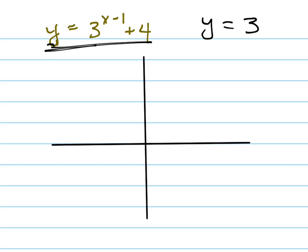3 to the x. And what does y equals 3 to the x do? It goes to the point 0, 1. It approaches 0 as x goes toward infinity, and it goes up exponentially to the right.